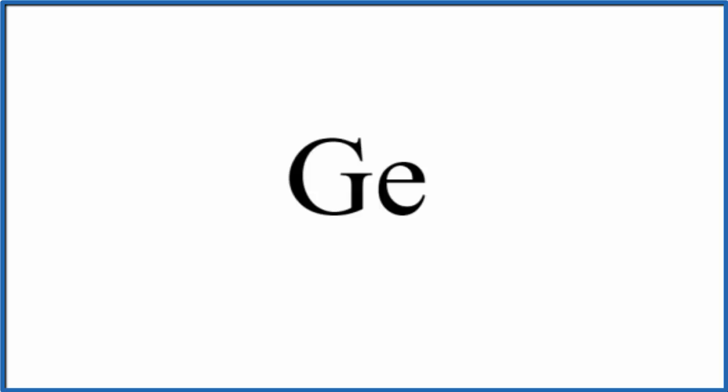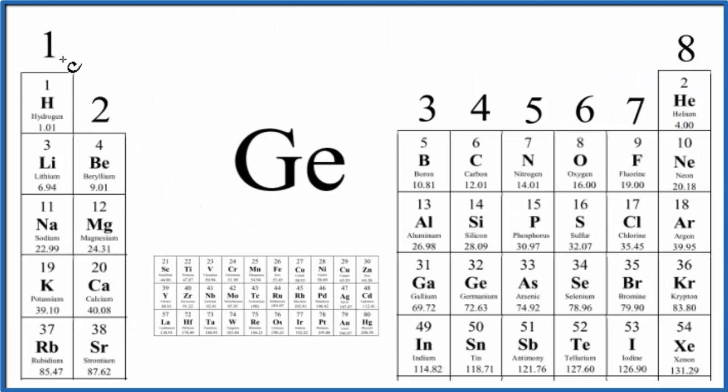The first is if we look at the periodic table here. We can see that group one has one valence electron, two has two valence electrons, skip the transition metals, then three, four, five, six, all the way up to eight. Ge is right here. It's in group 14, sometimes called 4A.